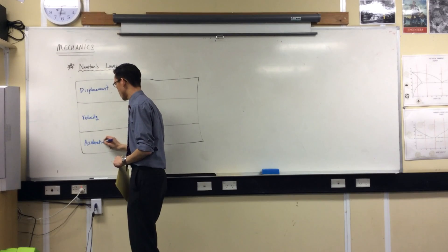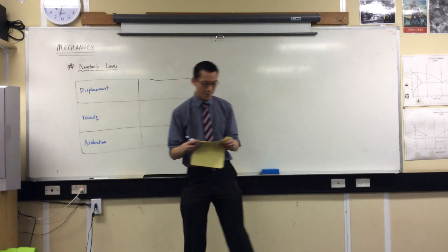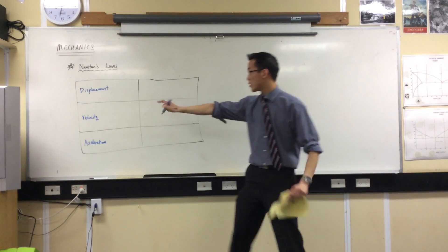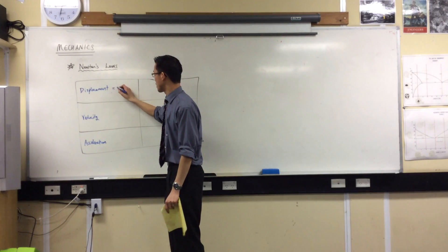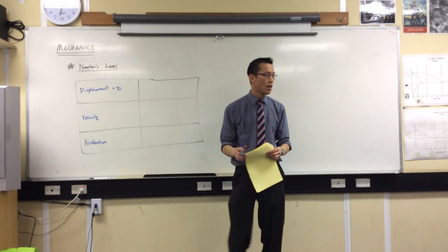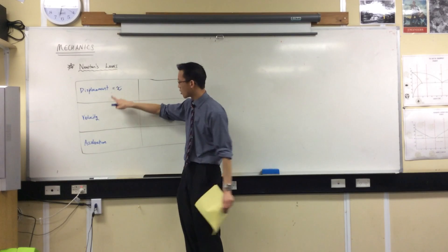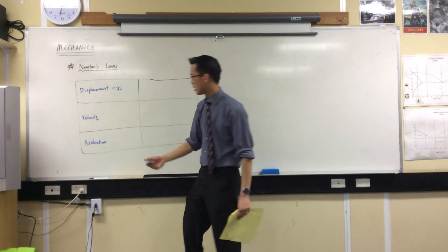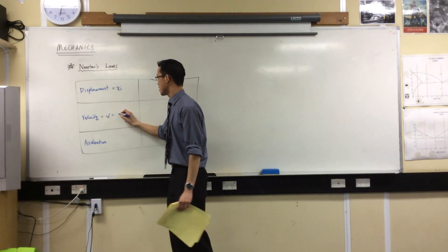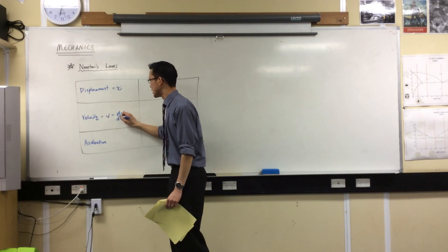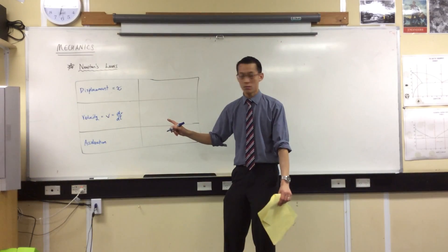So we just start with this guy, and we call this, we tend to name it x. Now when you define velocity, the easiest way to define it is in terms of displacement. You already told me it's dx on dt. So v is dx on dt.